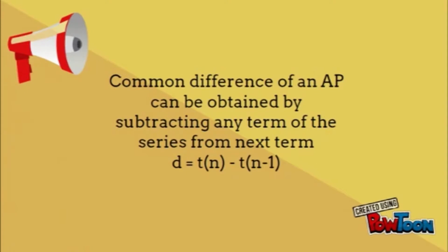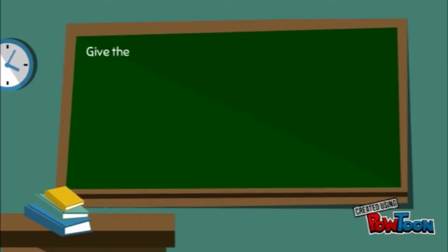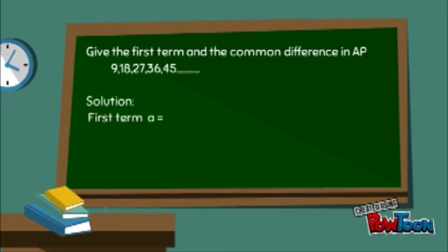Let us take an example. Give the first term and the common difference in AP 9, 18, 27, 36, 45. From the given progressions, first term a is 9.